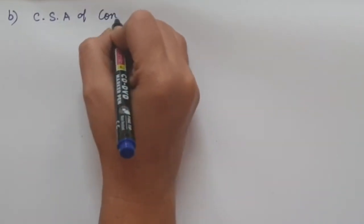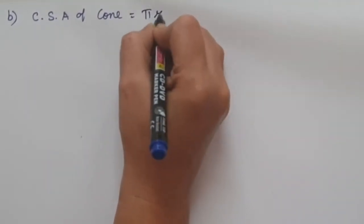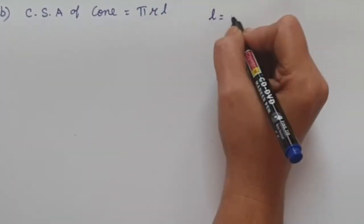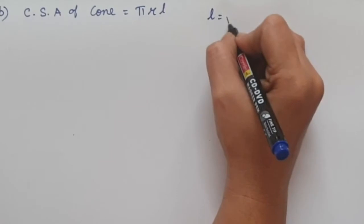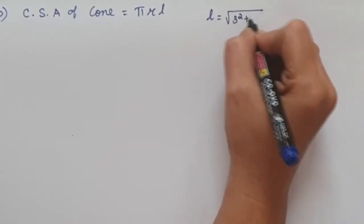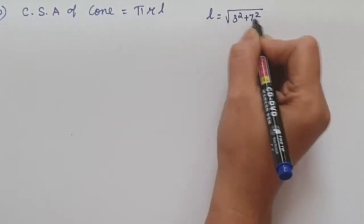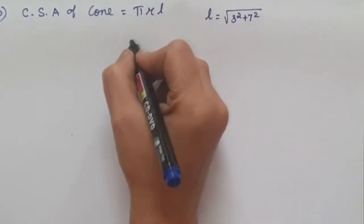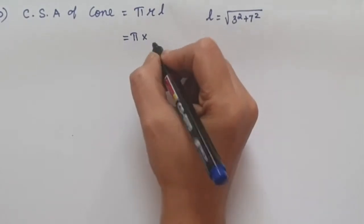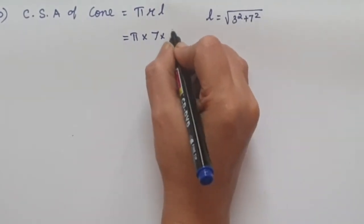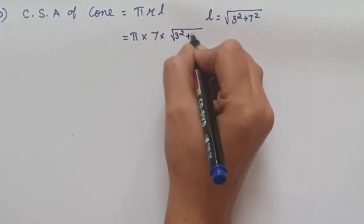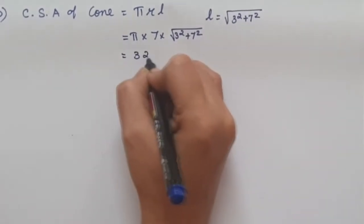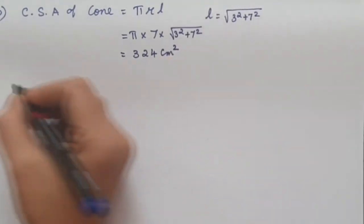For the slant height L, we calculate L = √(3² + 7²). Rather than simplifying L separately, we substitute directly: curved surface area of cone = π × 7 × √(3² + 7²). When we simplify, we get 324 cm².